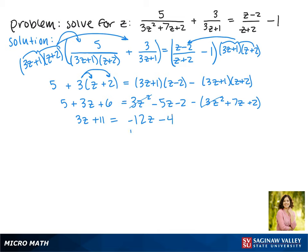Now we want to get our z's on one side and our numbers on the other, so we're going to add 12z to both sides. We get 15z + 11 = -4. Now we subtract 11 from both sides, we get 15z = -15. Dividing both sides by 15, we get z = -1.